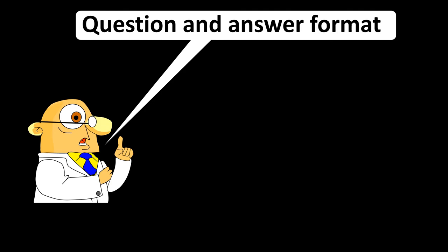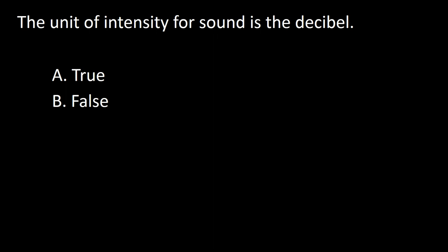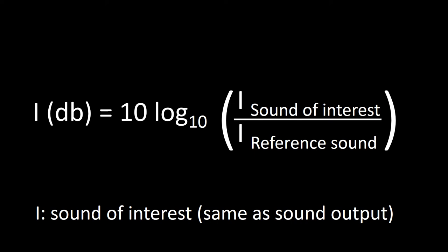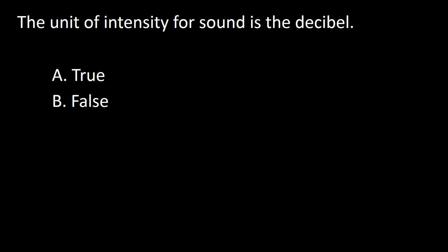We have finished the conversational section and will start the question and answer section. Question: The unit of intensity for sound is decibel — A: true, B: false. The decibel is a unit of measurement used to express the ratio of one value of a physical property to another on a logarithmic scale, named in honor of Alexander Graham Bell. The sound intensity level in decibels is defined as 10 times the logarithm of the ratio of the intensity of the sound of interest to the intensity of a reference sound. So the answer is A: true.